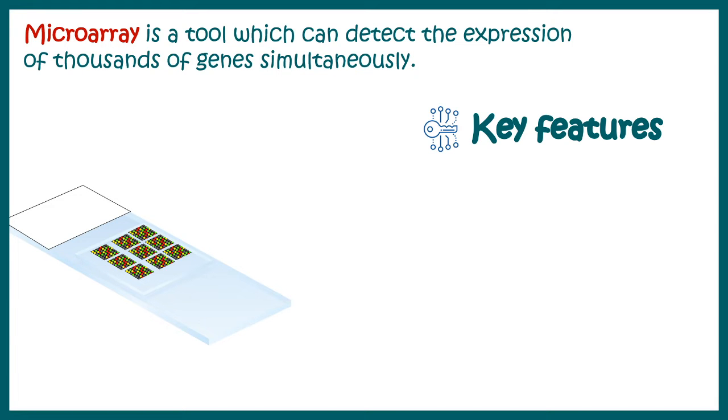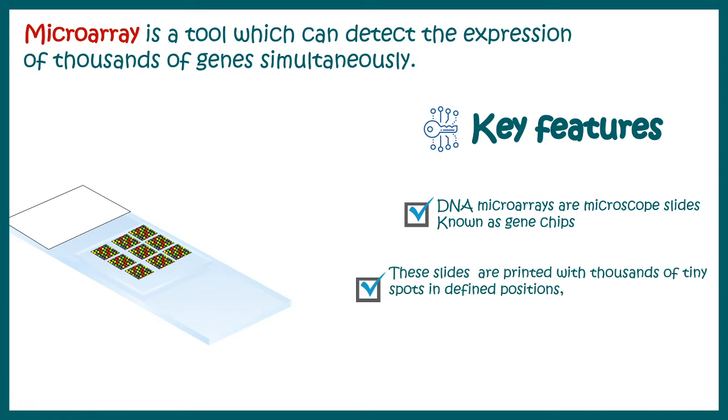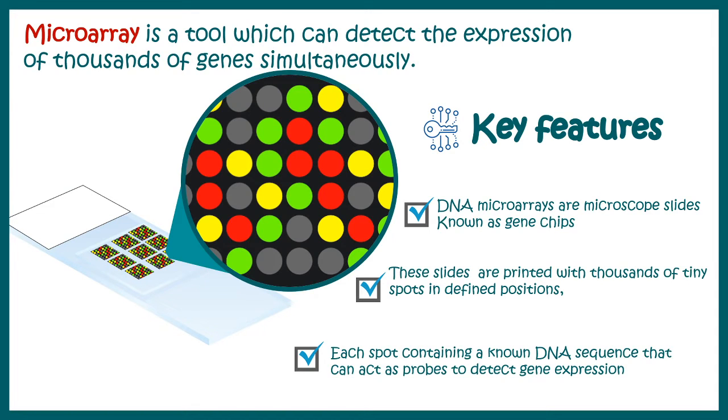Microarray is a tool which can detect the expression of thousands of genes simultaneously. Microarrays are nothing but a slide which has specific DNA probes. Sometimes they are referred to as gene chips. These slides are printed with thousands of tiny spots at defined locations. Each spot contains known DNA sequence which corresponds to a particular gene and these act as a probe to detect gene expression.